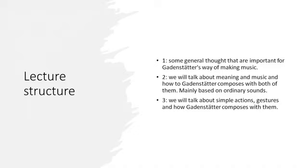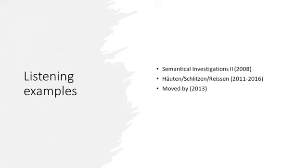Following his interests, this lecture is structured in three parts. First, some general thoughts that are important for Garnstetter's way of making music. Second, we will talk about meaning and music and how Garnstetter composes with both of them. Third, based on the first two parts, we'll talk about simple actions or gestures — basically simple movements — and how Garnstetter composes with them. I will use three pieces only today. For the second part, his ensemble piece Semantical Investigations 2 from 2008, which is also the major part of the lecture.